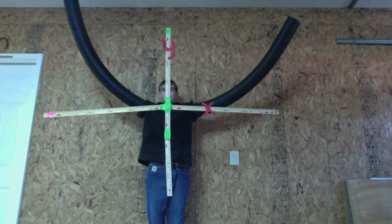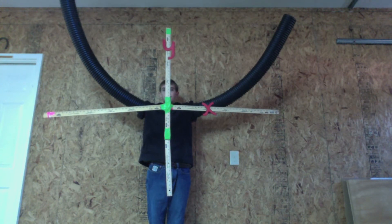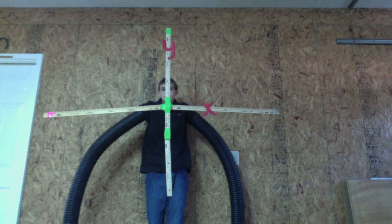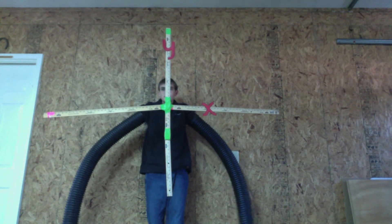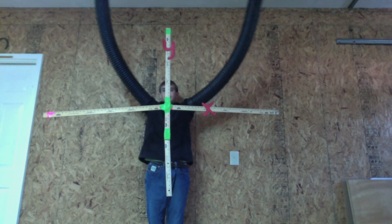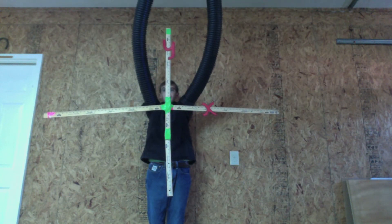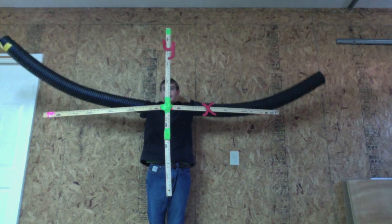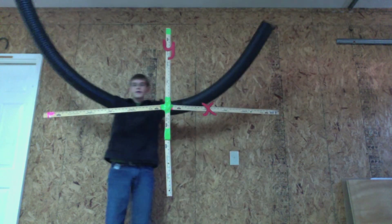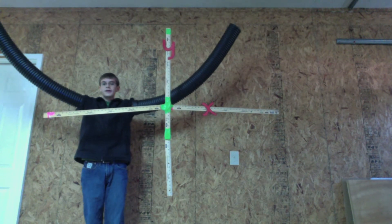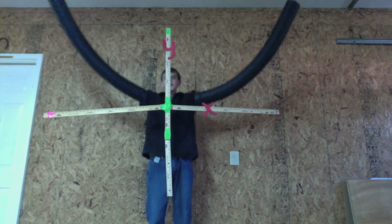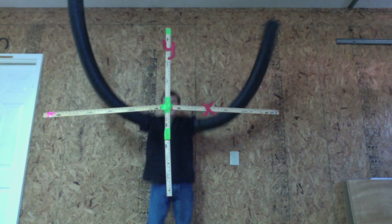The sign in front of the a value determines if the graph opens up or down. It also determines if there is a vertical stretch or a vertical shrink. The h value determines if the shift left or right. The k value determines if the shift up or down.